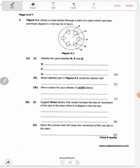Question two: Figure 3.1 shows a cross-section through a stem of a plant which had been previously dipped in a red dye for six hours. Identify the parts N, P, and Q.